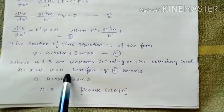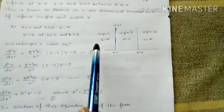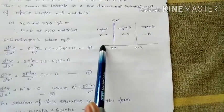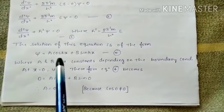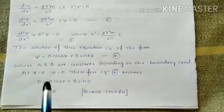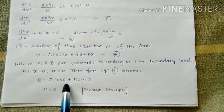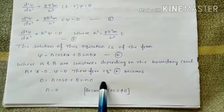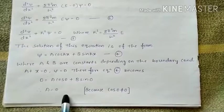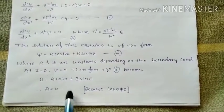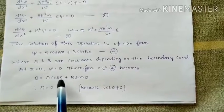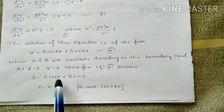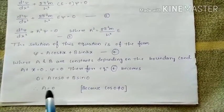This is the first boundary condition. Substituting x equals 0 and psi equals 0 into the equation gives: 0 equals A cos(0) plus B sin(0). Therefore A equals 0, because cos(0) is not equal to 0, so we cannot set cos(0) to zero. That is the reason A becomes 0.